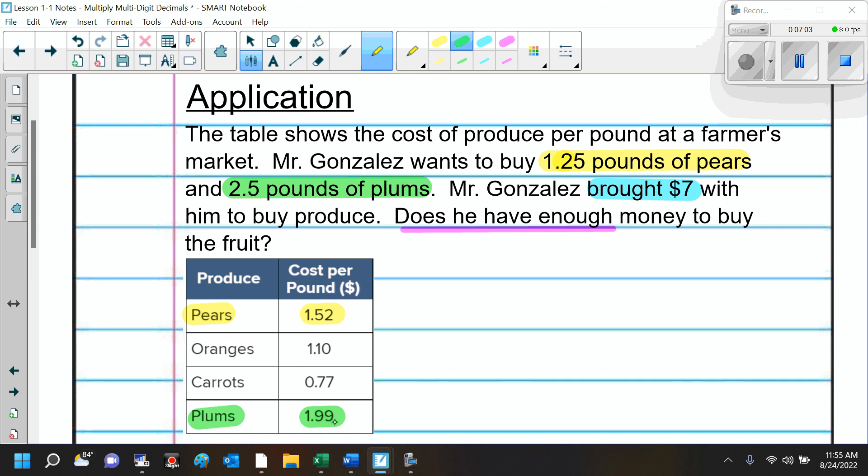The first thing we said we have to do is we need to find out how much he's spending on pears. So, when we do that, we are going to multiply 1.25 pounds times the cost per pound, which is $1.52. That's for the pears. Then, for the plums, we're going to multiply how much he wants to buy, 2.5 pounds, times the cost, $1.99. And, of course, like I said, I like to put the longer number on the top. So, I'm going to put $1.99 up here, and 2.5 pounds down here. And we're going to multiply.